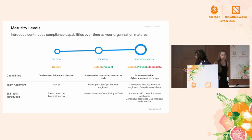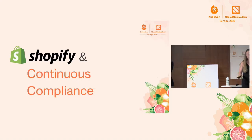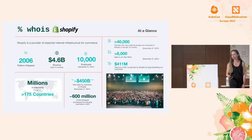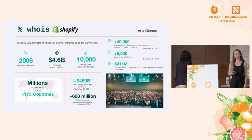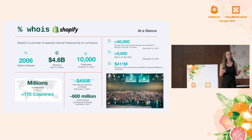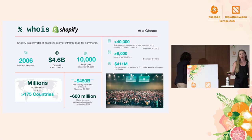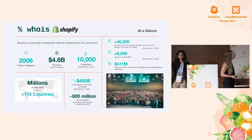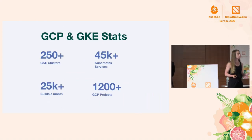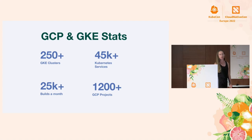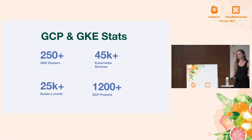Shopify — if you don't know who we are, it's very likely that you've purchased something from one of the millions of merchants who use our platform. We're making commerce better for everyone. We offer a platform so small, medium, and large businesses can build their e-commerce presence. We do payments, and everything is done in a compliant, secure way. To support that amount of merchants, we have lots of GKE clusters, thousands of Kubernetes services, even more builds per month and GCP projects — and this data is a couple months old, so it's probably even larger now. Anyone from a compliance or audit team might see these numbers and panic. Our compliance programs include PCI, Sarbanes-Oxley, SOC 2, and Swift.